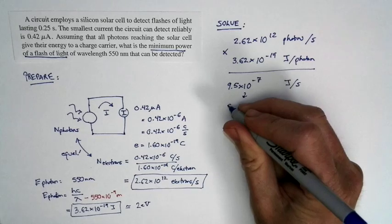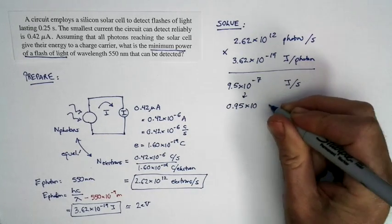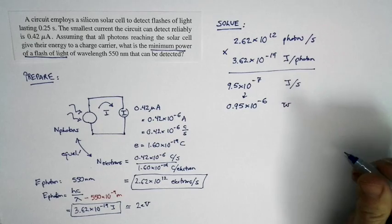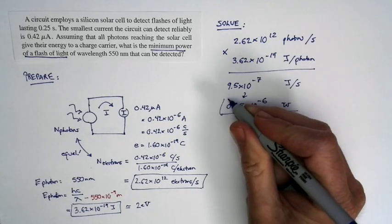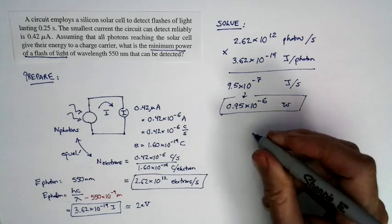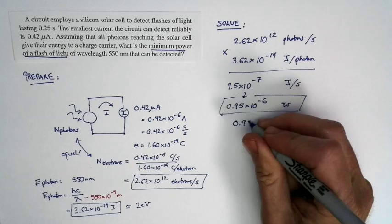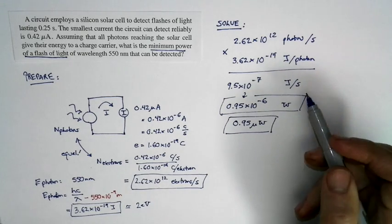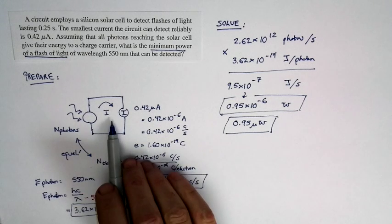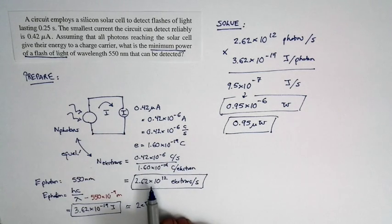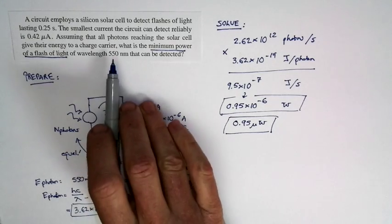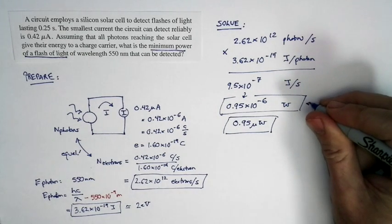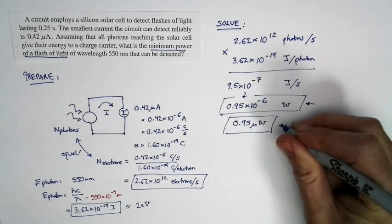Rewriting that, 9.5 times 10 to the negative 7th is 0.95 times 10 to the negative 6th joules per second — and joules per second is watts. This is the power of the flash of light: 0.95 times 10 to the negative 6th watts, or 0.95 microwatts. That's the minimum power detectable. We found it by determining electrons per second from the smallest measurable current, calculating energy per photon, and since each photon excites one electron, multiplying photons per second by joules per photon.